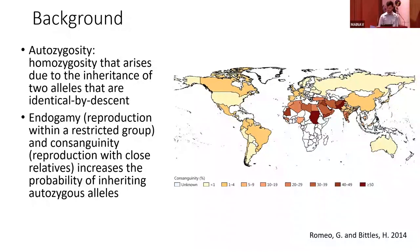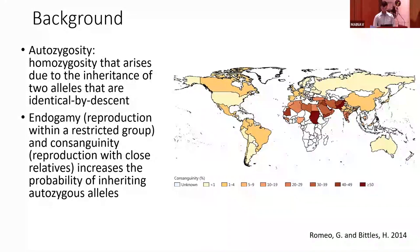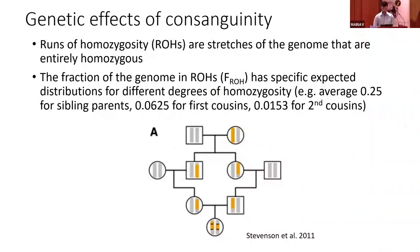Consanguinity is practiced throughout the world, with regions of higher consanguinity shown in darker red on the map. The highest consanguinity is practiced in North Africa, the Middle East, and some regions of South Asia, notably Pakistan. The primary genetic effect of consanguinity is that it increases the length and number of fully homozygous haplotypes in an individual's genome — these are called runs of homozygosity. We can quantify consanguinity by calculating an individual's fraction of the genome in runs of homozygosity, referred to as F-ROH.